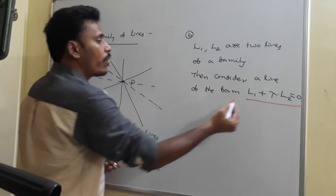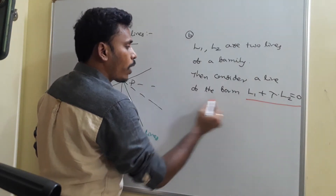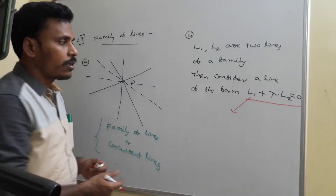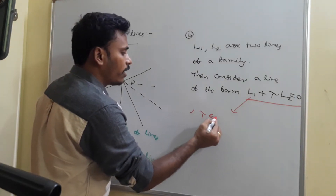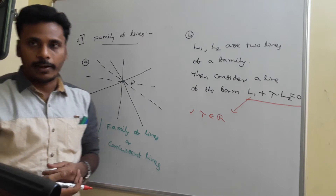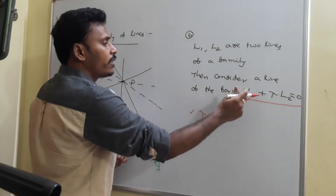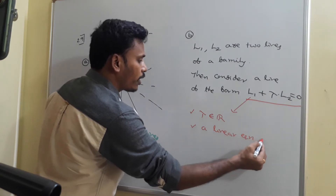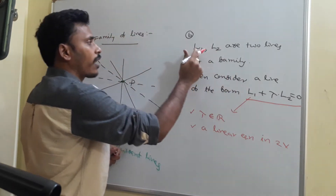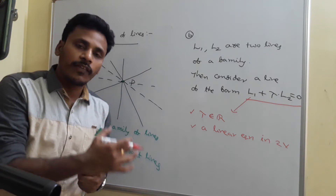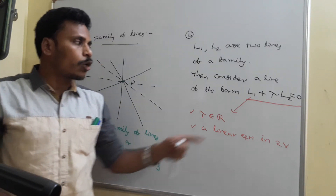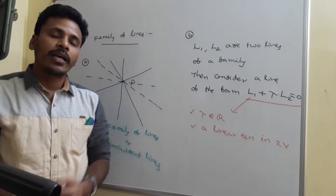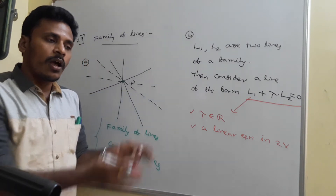This L1 plus lambda L2 equals 0: clearly it is a linear equation in two variables. Lambda is a real number — we can give it any real value. L1 plus lambda L2 equals 0 is a linear equation in two variables again, because L1 is a line whose general form is A1x plus B1y plus C1 equals 0, and L2 is A2x plus B2y plus C2 equals 0. So L1 plus lambda L2 is one linear equation plus lambda times another linear equation.